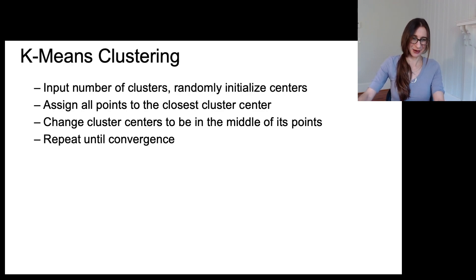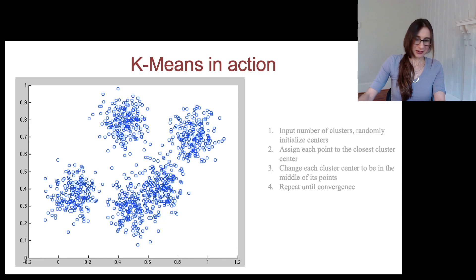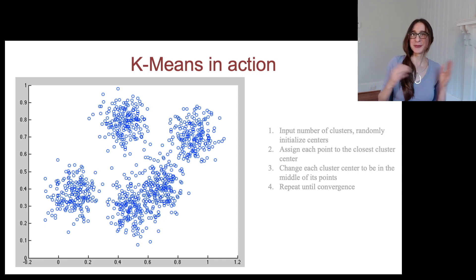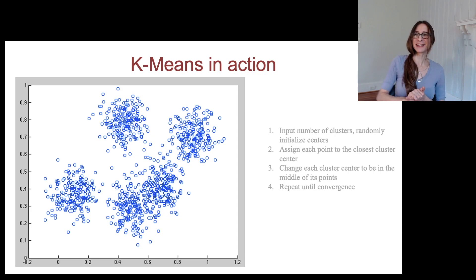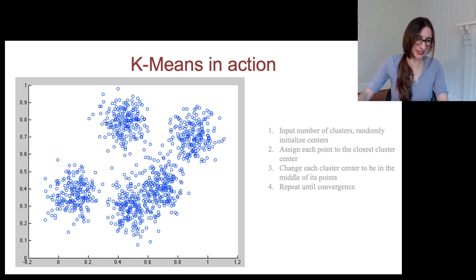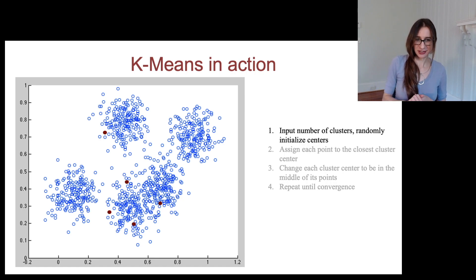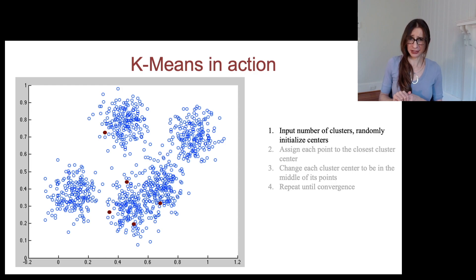We take our data — here it's in two dimensions so I can see everything — and I input the number of clusters, which I happen to know is five because I can see the whole thing. In reality, with high dimensional data you wouldn't know this. Then we randomly initialize the cluster centers. These cluster centers were definitely not chosen well, but that's okay because they're going to move.